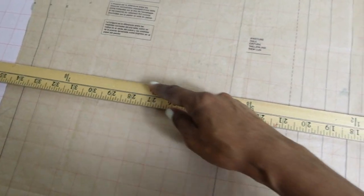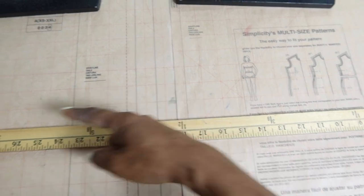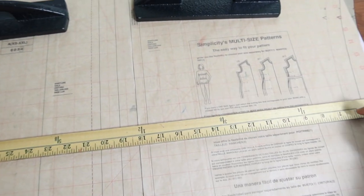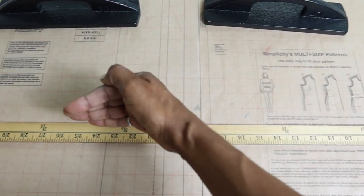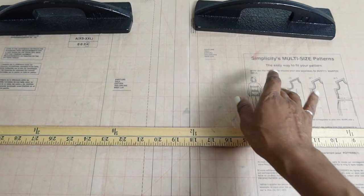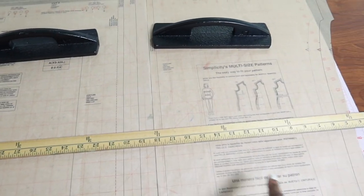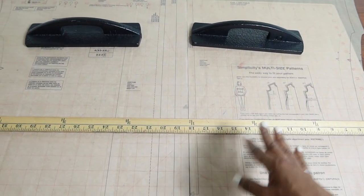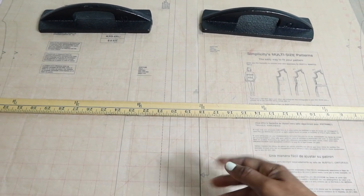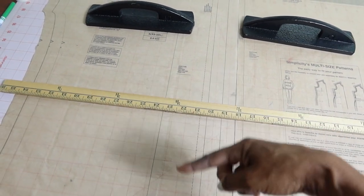I'm going to put my ruler on a line and draw it across, then cut it. That way I'll be sure that I'm lengthening the pattern in the same area on the front and the back. Once I cut it and separate it, I'll add some paper between the two pieces to lengthen it the amount I want.